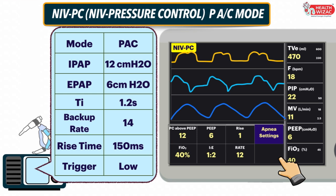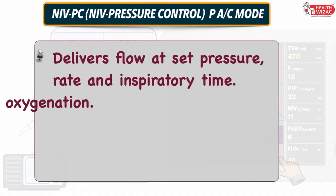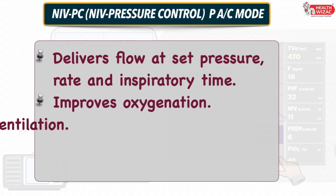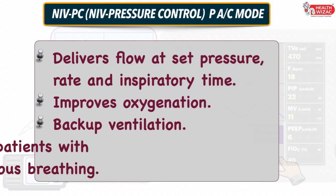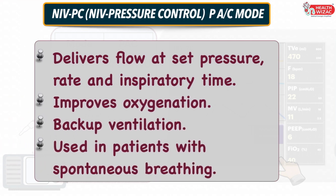Key highlights of this mode: it delivers flow at set pressure and inspiratory time with the advantage of respiratory rate backup. It improves oxygenation and provides backup ventilation — if the patient fails to initiate a breath, then the machine goes into backup ventilation and delivers it at the set backup rate.